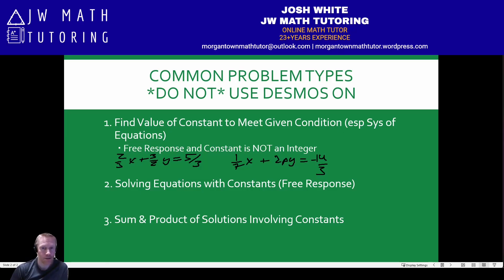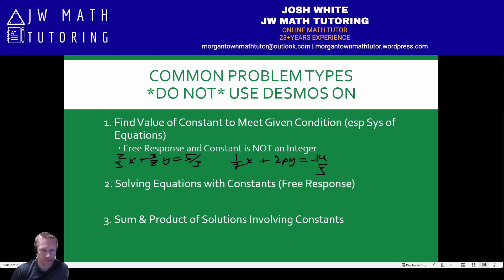The problem is this can take forever in Desmos because the P value you're solving for does not need to be an integer — it could be a fraction. So you might have to spend time using a slider to graph both lines and match them up so they either look horizontal or overlap completely. And you might have to keep zooming in if it's a decimal, setting the start and end point for the slider smaller and smaller and decreasing your step values. You can end up wasting a lot of time doing that.